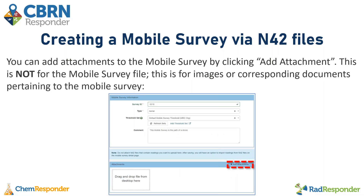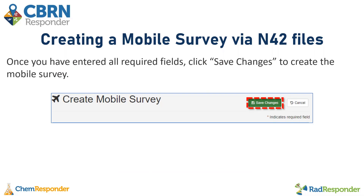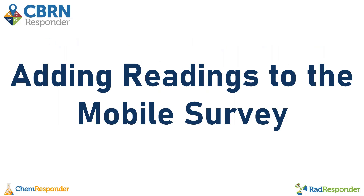The final section on the create form is the attachment section, where you can add an attachment by clicking the add attachment button. This is not for the mobile survey N42 file — it is only for images or corresponding documents pertaining to the mobile survey. There is a note on this page reminding you not to attach your N42 file here. Once you have entered all the required fields, click the save changes button to create the mobile survey.